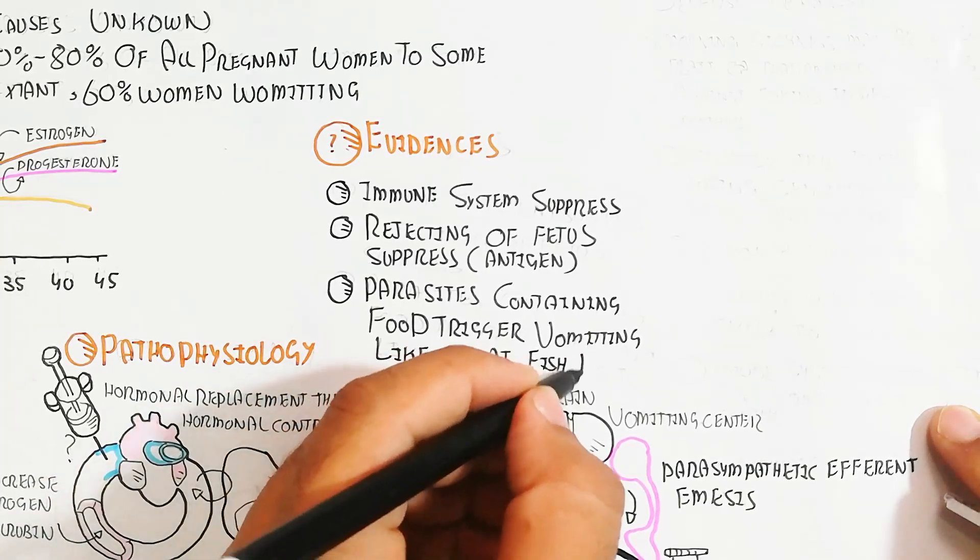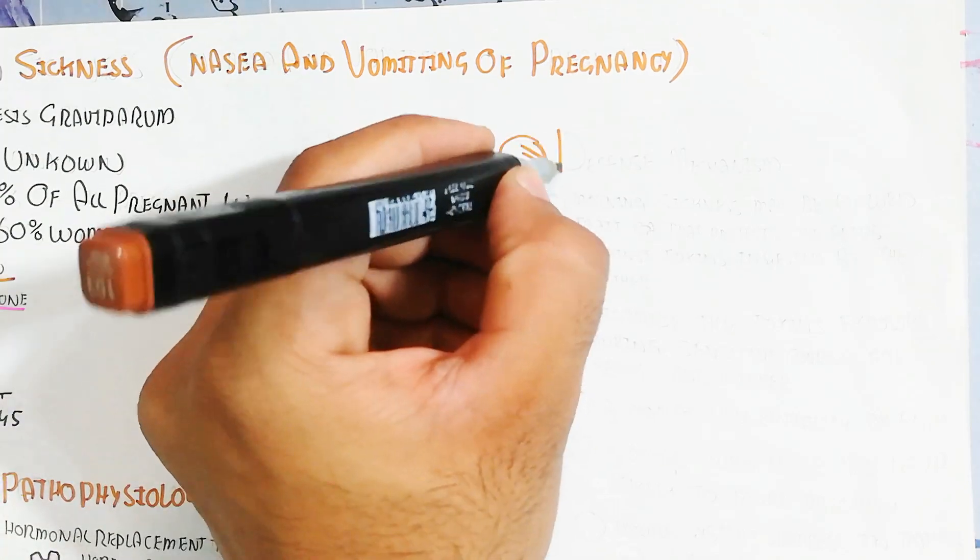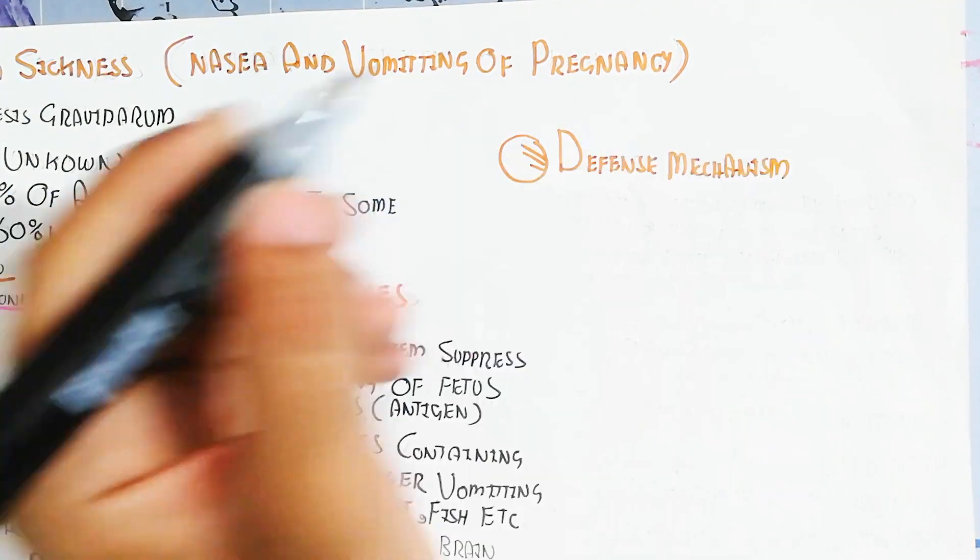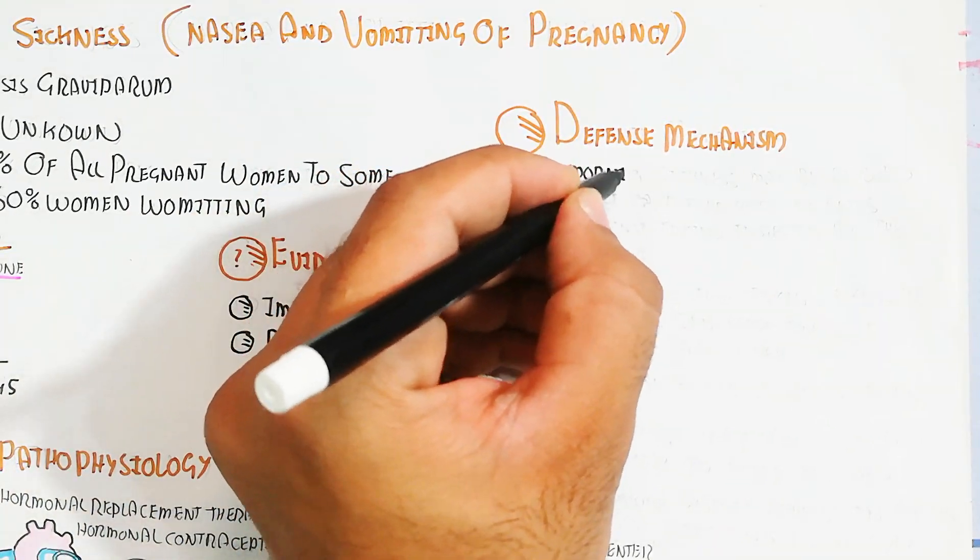The fetus wants to develop and triggers the vomiting reflex due to parasitic infection prevention. It is an evolutionary adaptation for prevention of early miscarriage or early childbirth.